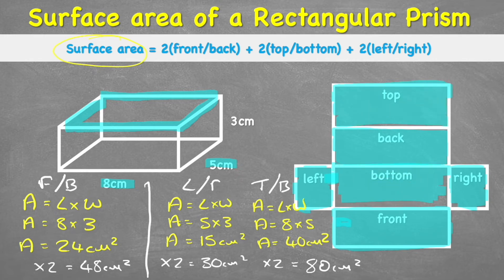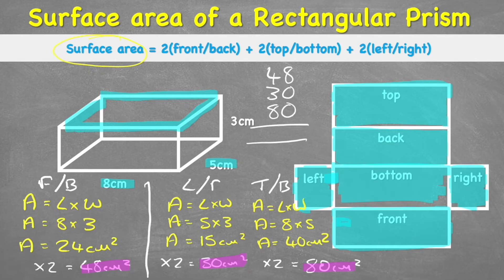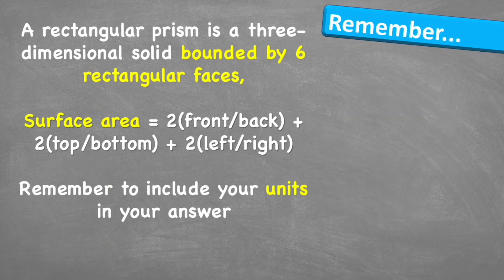Now we have measured all the individual surfaces, we need to add them all together to get the total surface area. Adding 48, 30, and 80 in column addition gives a total of 158 centimeters squared. So the surface area equals 158 centimeters squared.